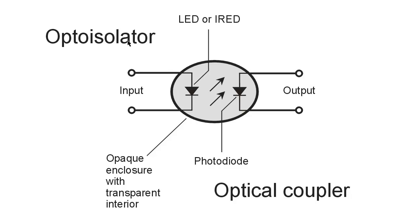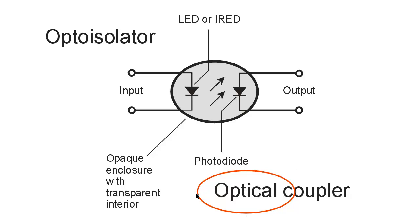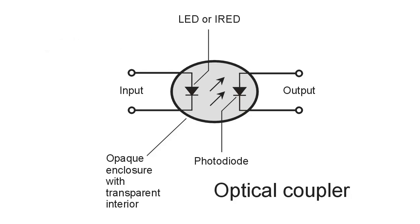In either case, the word 'optical' is a little bit of a misleading term because that implies visible light. But in fact, these types of devices can also work with infrared radiation, which lies just below the visible light spectrum frequency-wise,